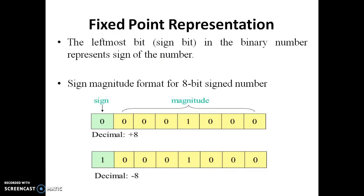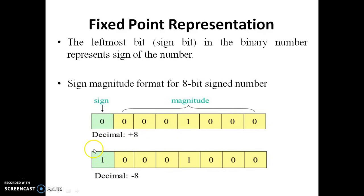Now we see one example of fixed point representation. The decimal number plus 8 is converted into binary and represented in 8-bit binary format as 0 0 0 0 1 0 0 0. The leftmost significant bit is called the sign bit and the rest of the bits are called magnitude. If the leftmost bit is 0 it means positive number, and if leftmost bit is 1 it means negative number. So now you can see both plus 8 and minus 8.